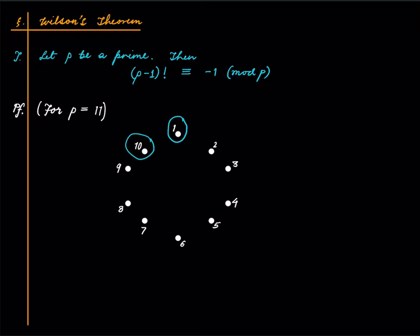Now what about 2? 2 times 6 is 12, so 6 is the inverse of 2. 3 times 4 is 12, which leaves remainder 1 modulo 11. 5 times 9 is 45, which is 44 plus 1, so 9 is inverse of 5. And 8 times 7 is 56, which is 55 plus 1, and hence 8 is inverse of 7. So we've recorded these relationships.